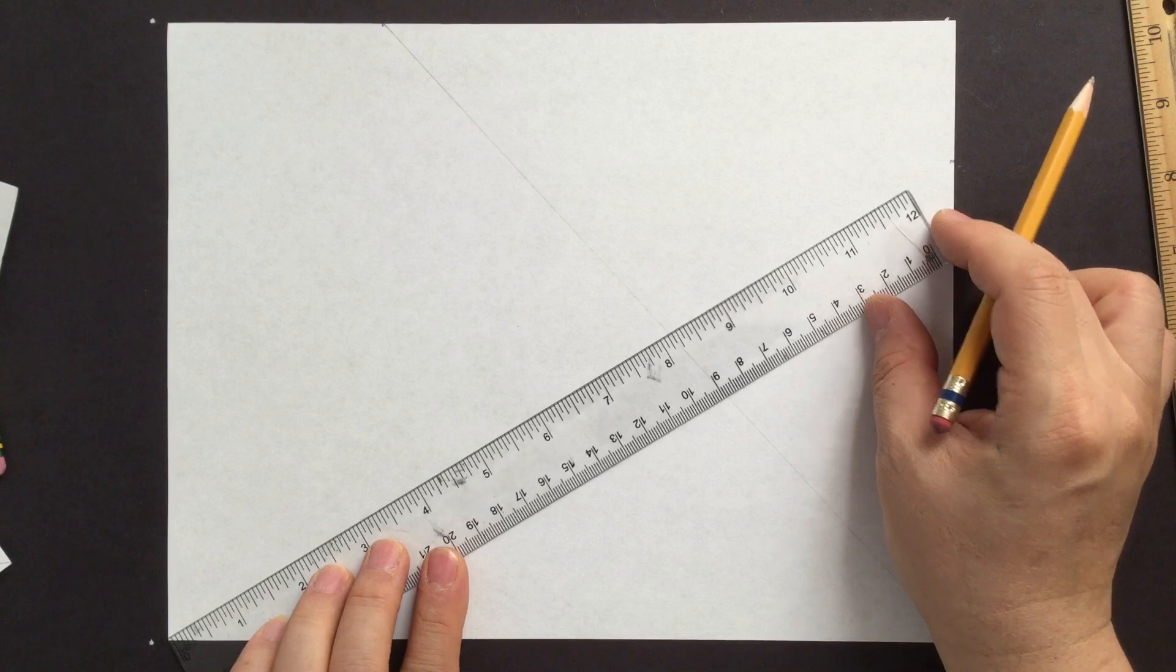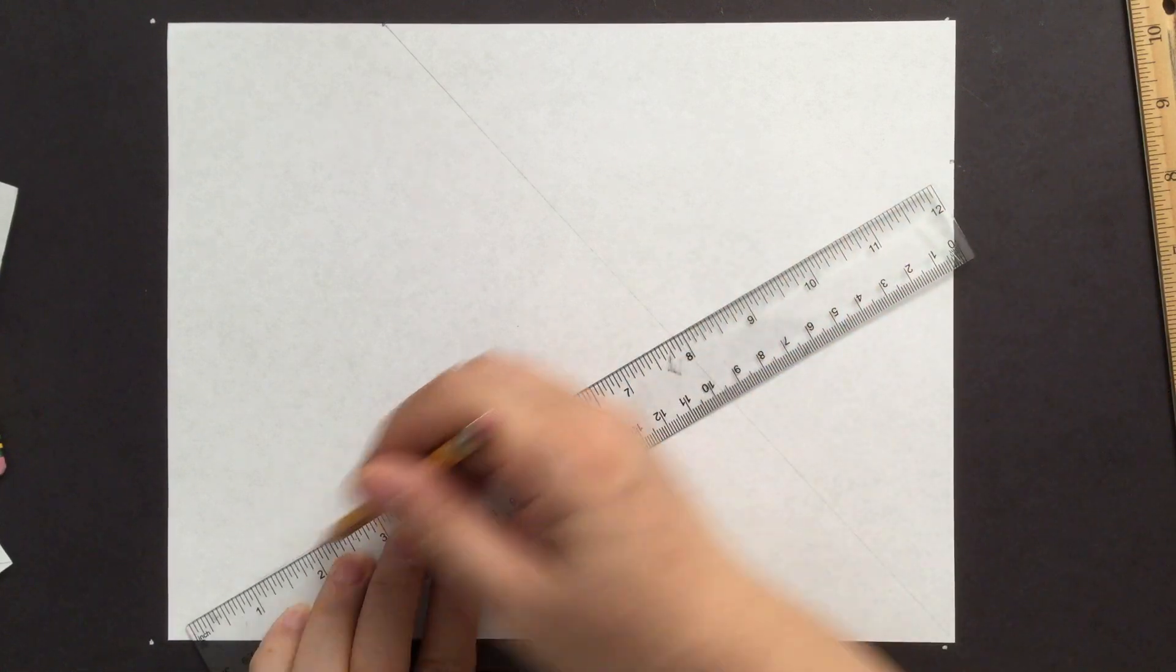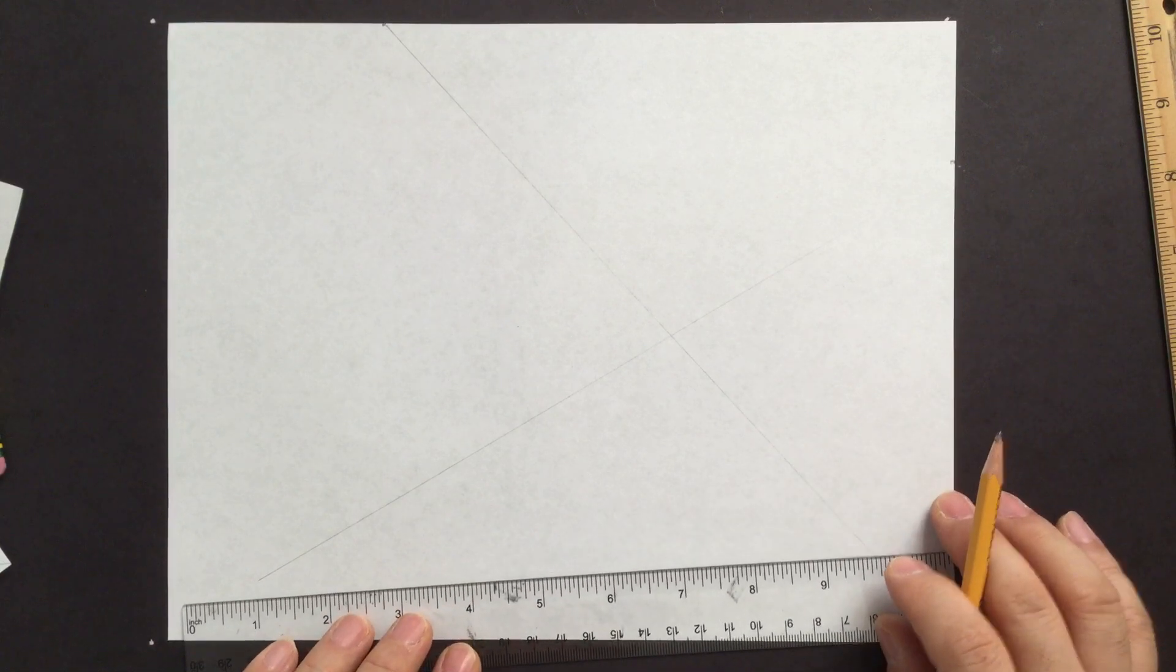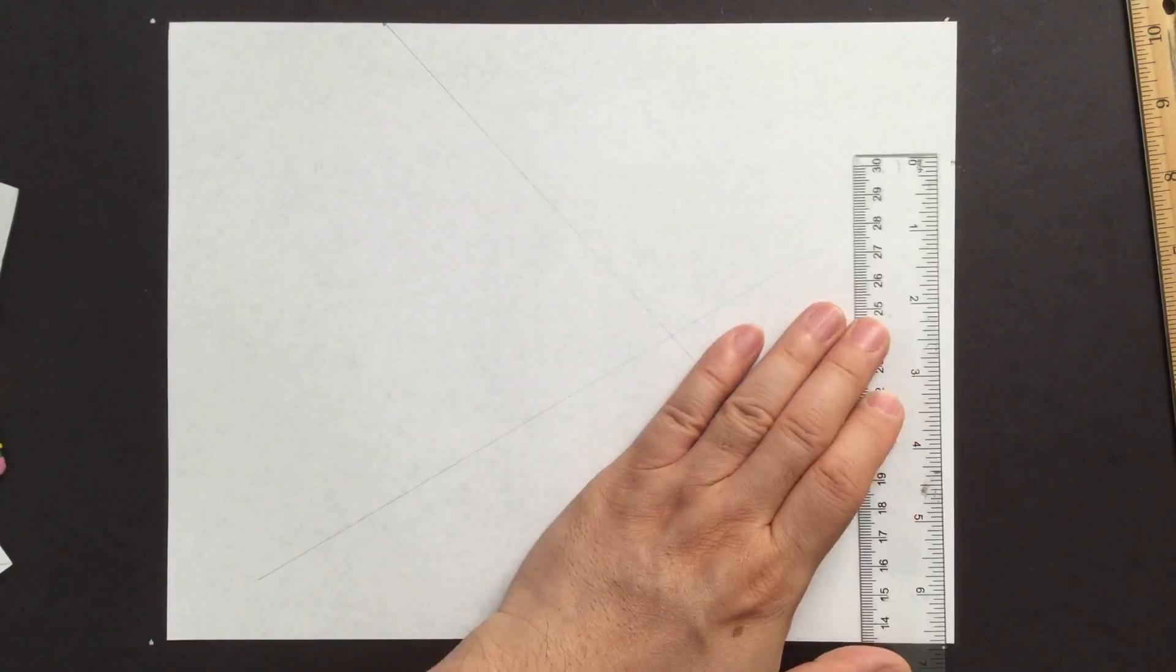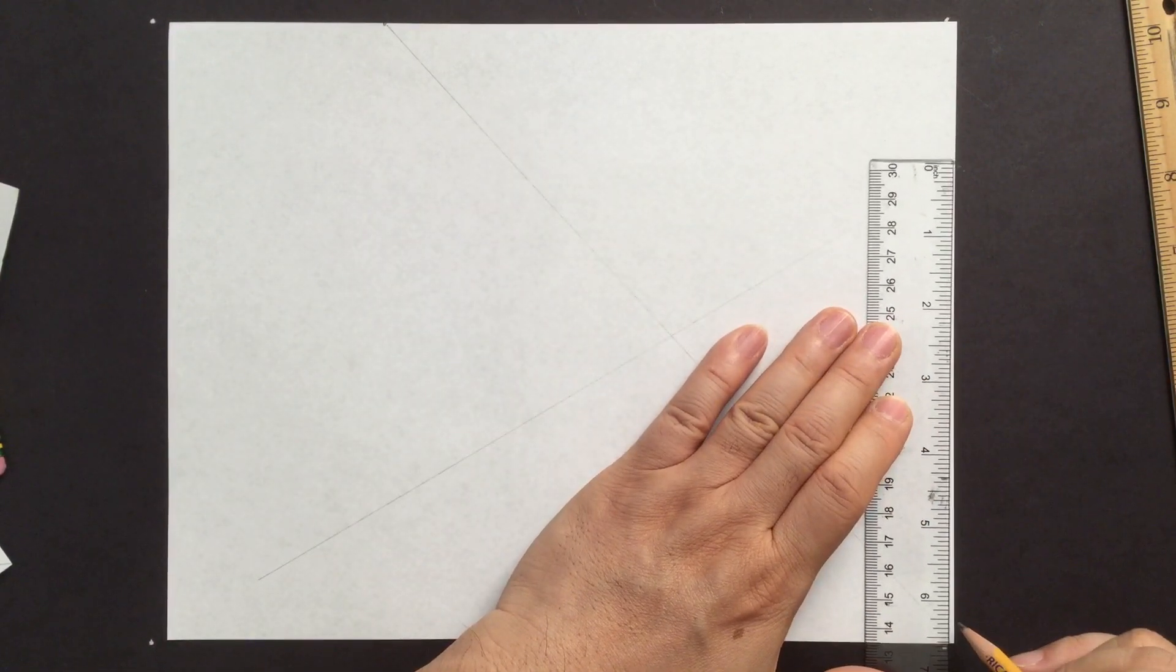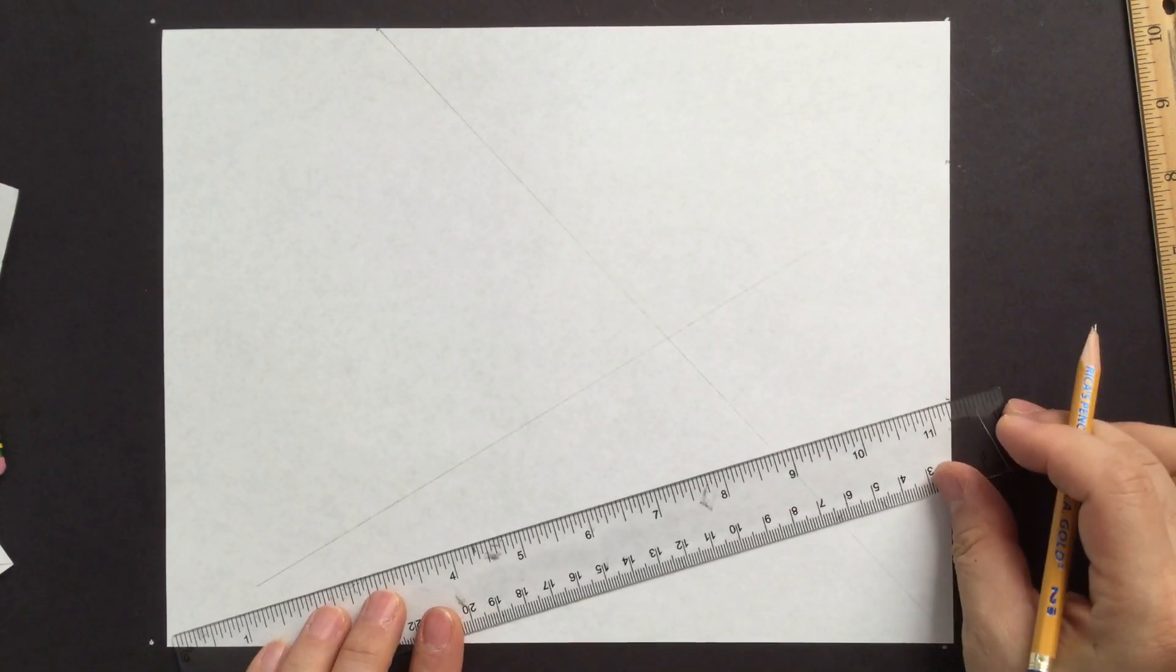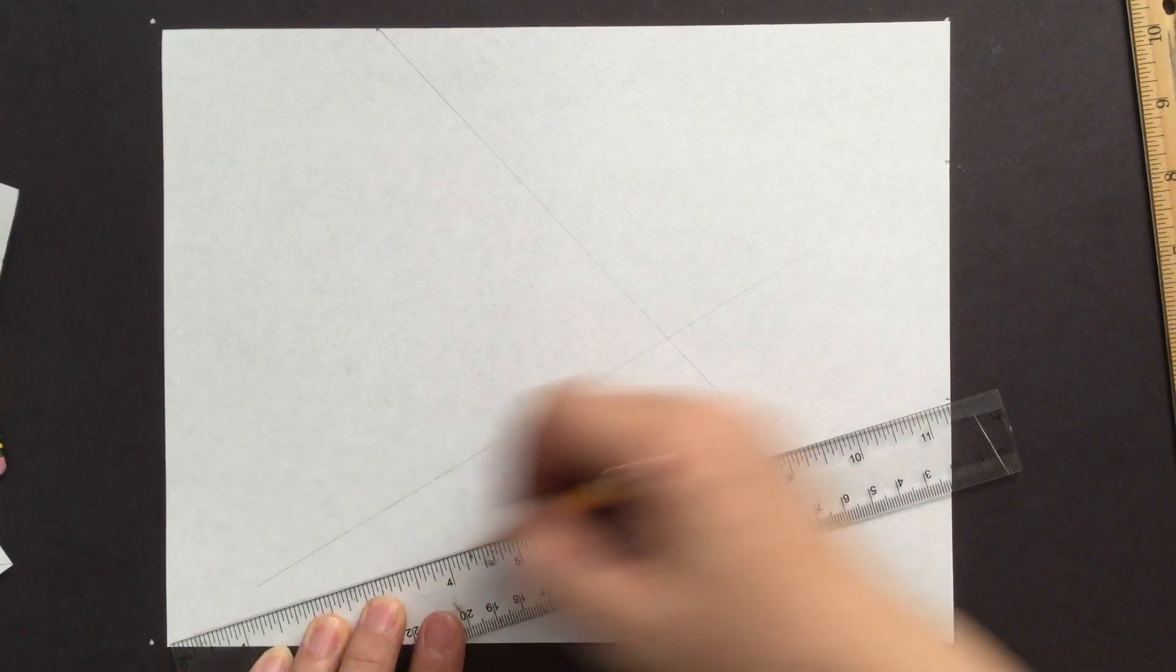It's a 30 degree. So 15 degree you need to create for the trimetric. And all you have to do is just go half. If you measure, it's about 6.5. So 3.25.